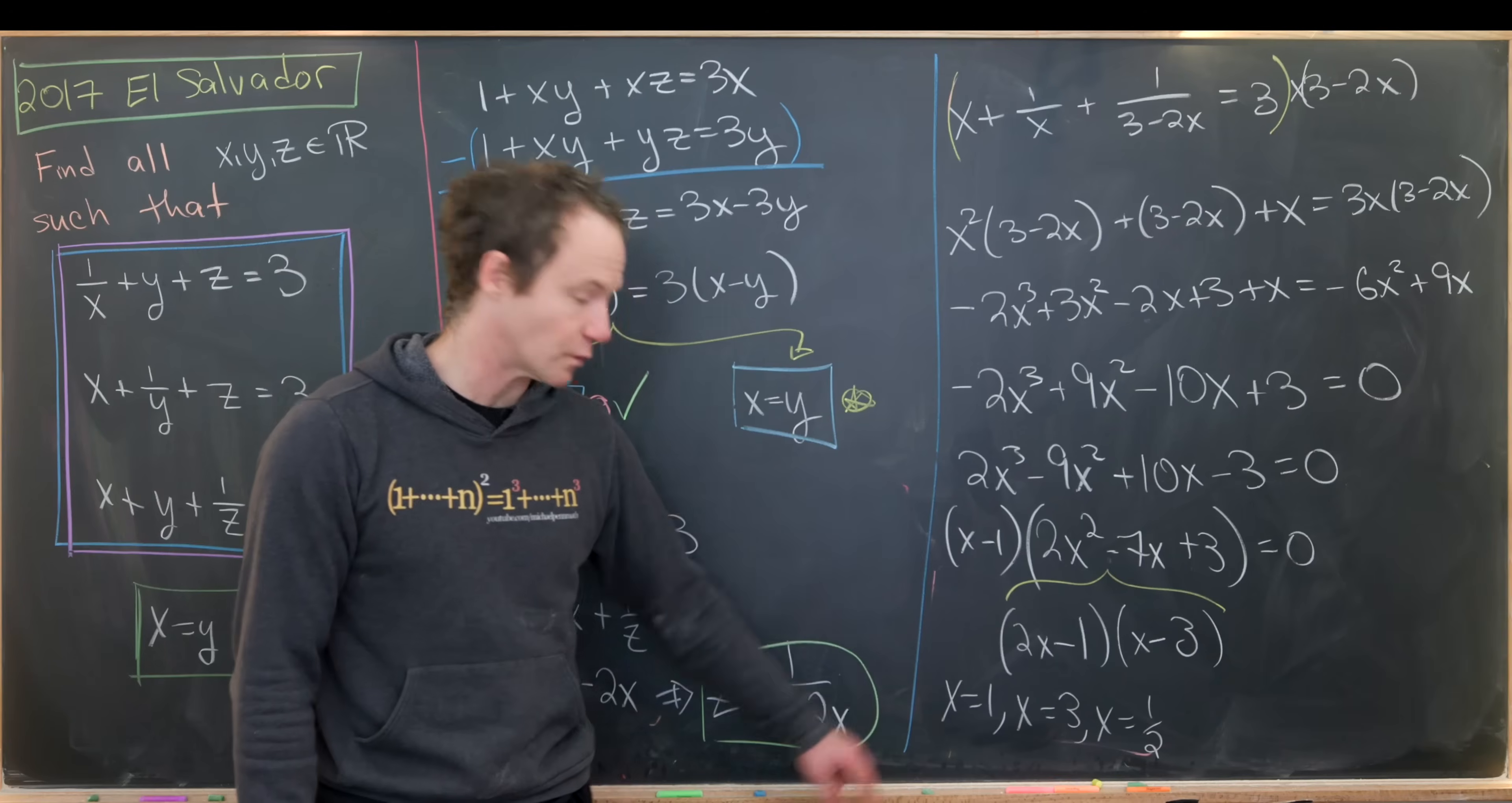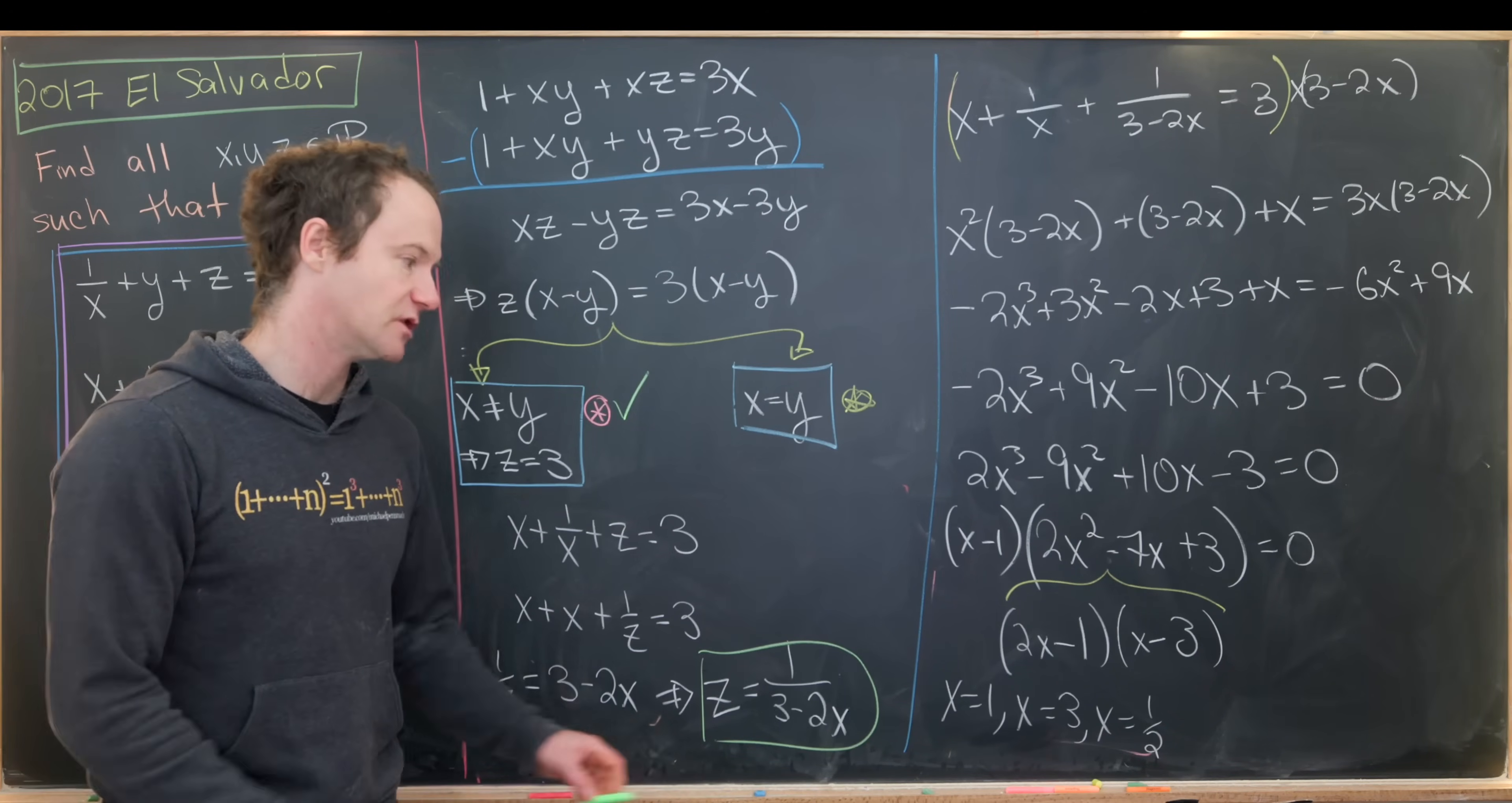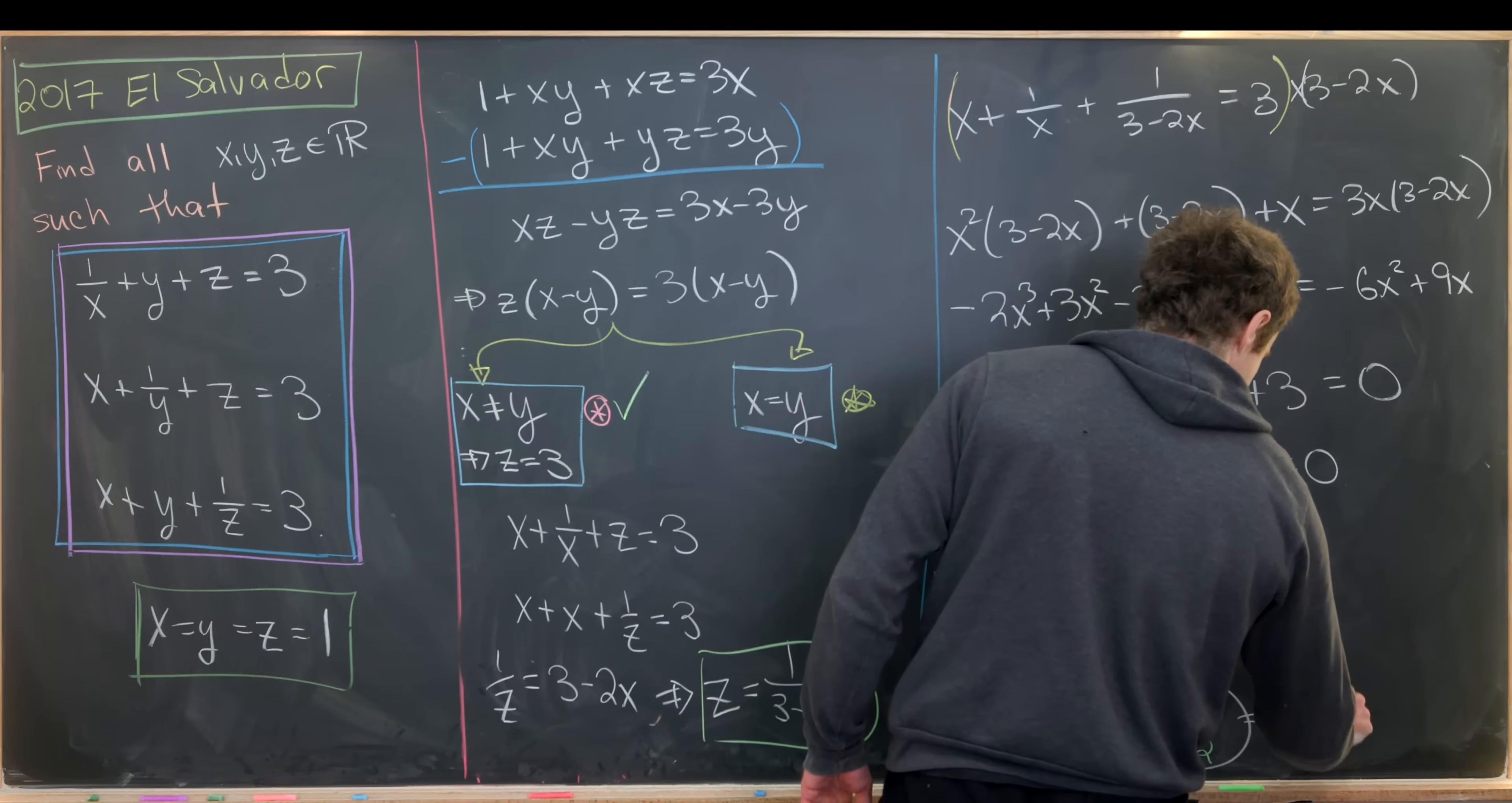Let's notice this x equals 1 case corresponds to that trivial solution we had over here. This x equals 3 case corresponds to that one that we guessed about from the symmetric properties of this solution. So all we need to check now is the x equals half case. Notice it's not only x equals half, but it's also y equals 1 half. So we've got x equals 1 half and y equals 1 half. Maybe I'll leave it to you to check if this gives us a solution as well. If we have x is 1 half and y is 1 half, tell us what we get for z. And that's a good place to stop.